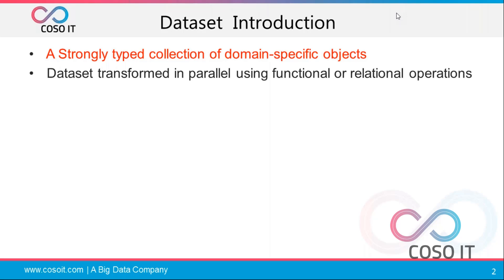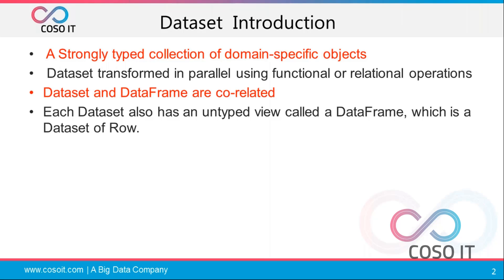Functional operations can be like a select statement, filtering data, or grouping data. Dataset and DataFrame are correlated with each other. A Dataset can be an untyped view, which is called DataFrame. A Dataset of a row is a DataFrame — so we provide specific rows with all schema information, and a Dataset of a row is called a DataFrame.